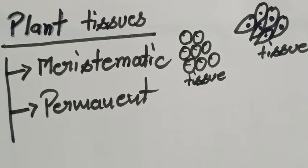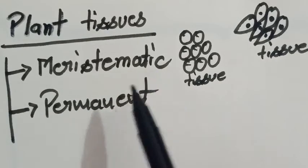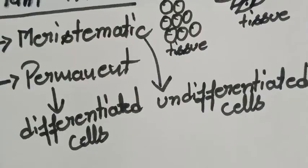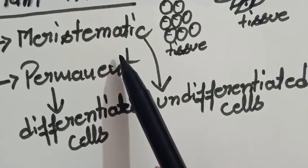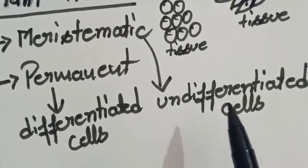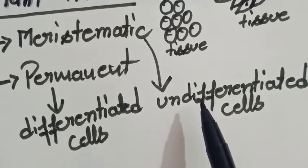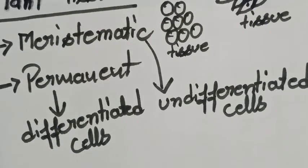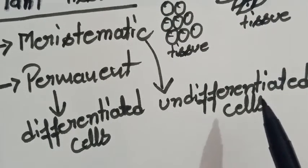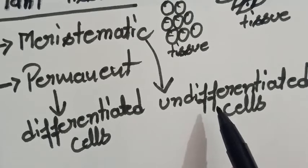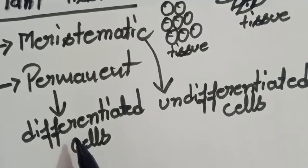Plant tissues can be classified into two types: first, meristematic tissue, and second, permanent tissue. Meristematic tissues are composed of undifferentiated cells, which means they can be modified into new cells — they are capable of cell division and give rise to new structures.